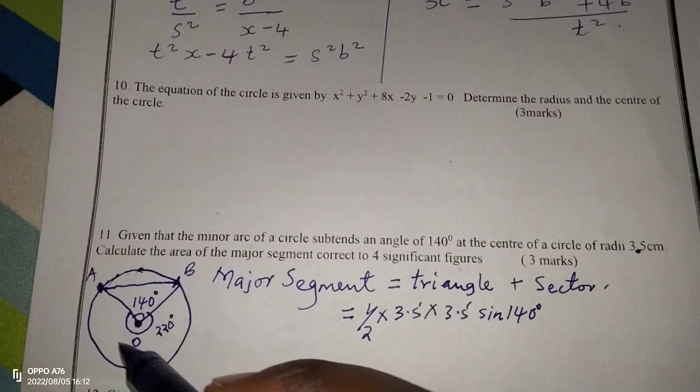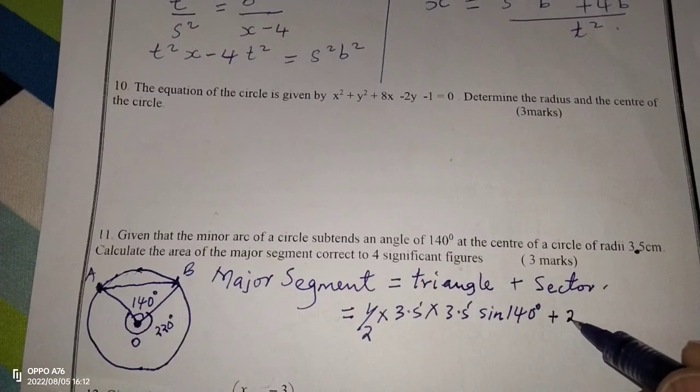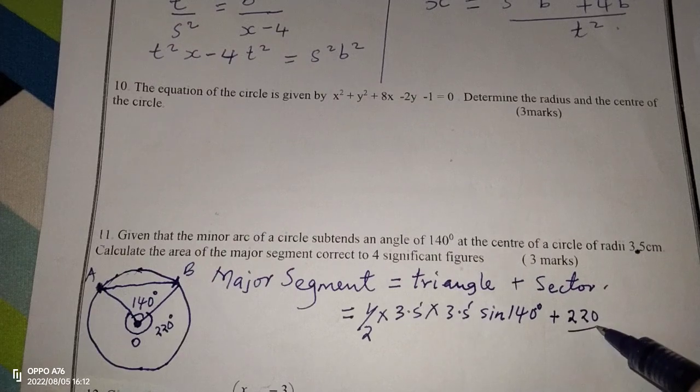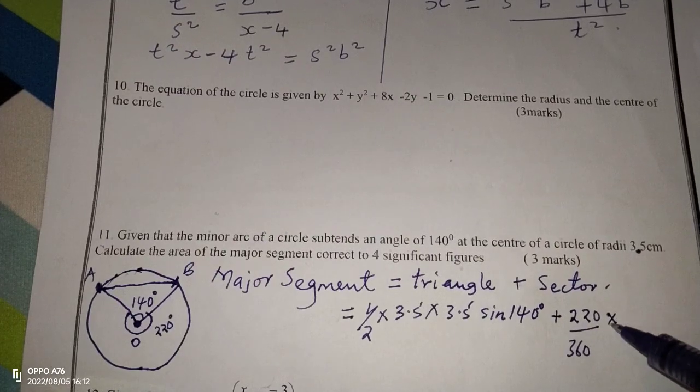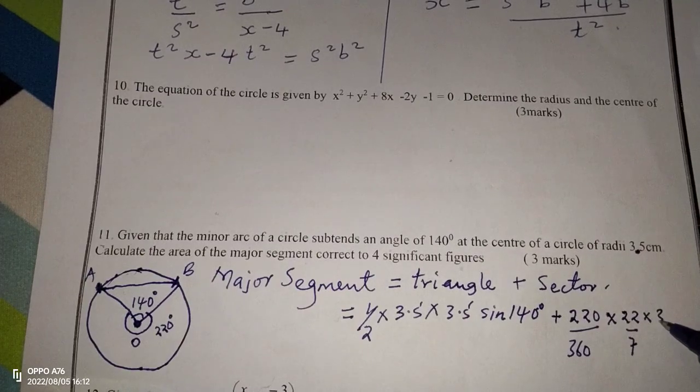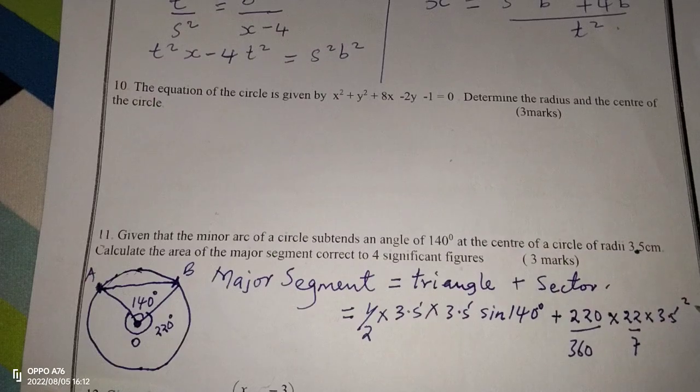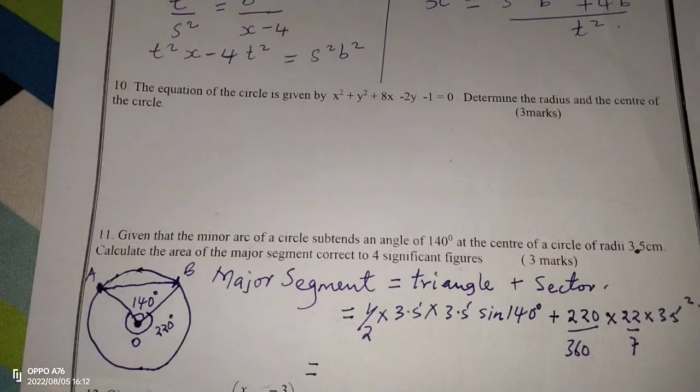So for the major sector, we have an angle of 220, so we use 220 divided by 360, pi r squared, and we can use a pi of 22 out of 7, then 3.5 squared.